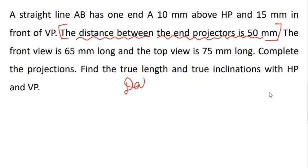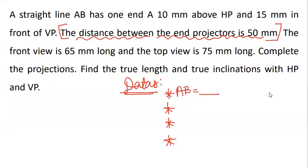First of all, we need to write the data which are necessary to draw a line. There are four data that are necessary. If you want to draw a line, the length is one, then the end point is another, then the length of the line. These are the data that are necessary to draw a line.